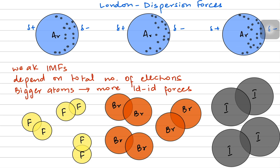Fluorine atoms, which are smaller, have fewer London dispersion forces. Bromine atoms, which are bigger and have more electrons, have more instantaneous dipole-induced dipole forces because there are more chances of creating temporary dipoles. Iodine has a very large atom with a very large number of electrons, so iodine has a higher chance of creating temporary dipoles — more London dispersion forces than bromine or fluorine. That is why fluorine is a gas, bromine is a liquid, and iodine is a solid — because of their temporary dipole forces, also known as London dispersion forces, which are weaker than hydrogen bonds or permanent dipole forces.